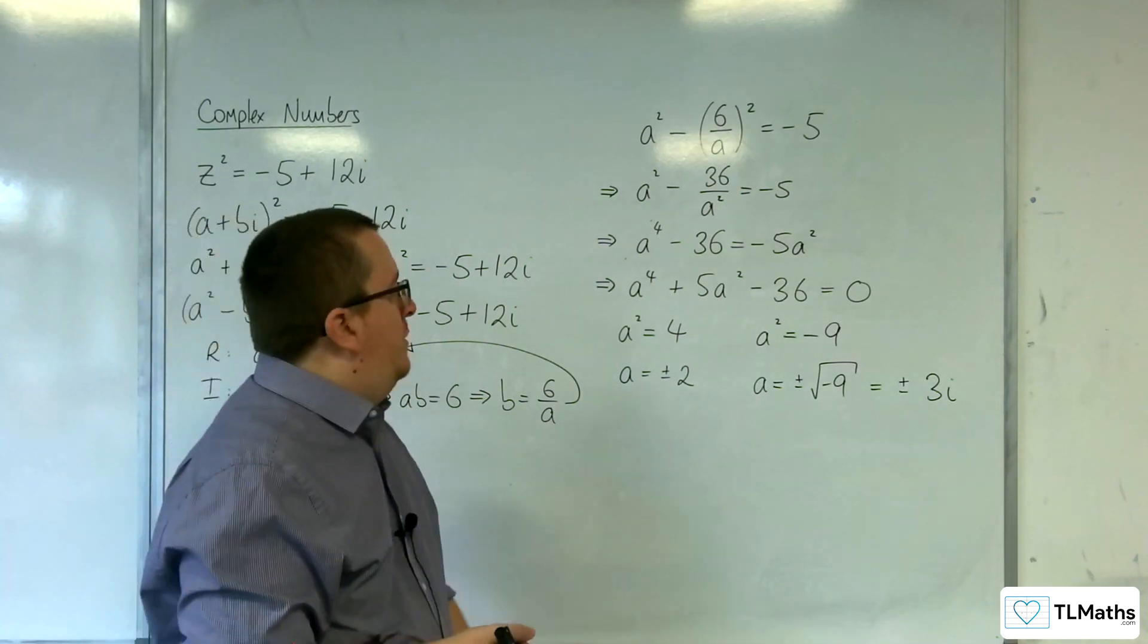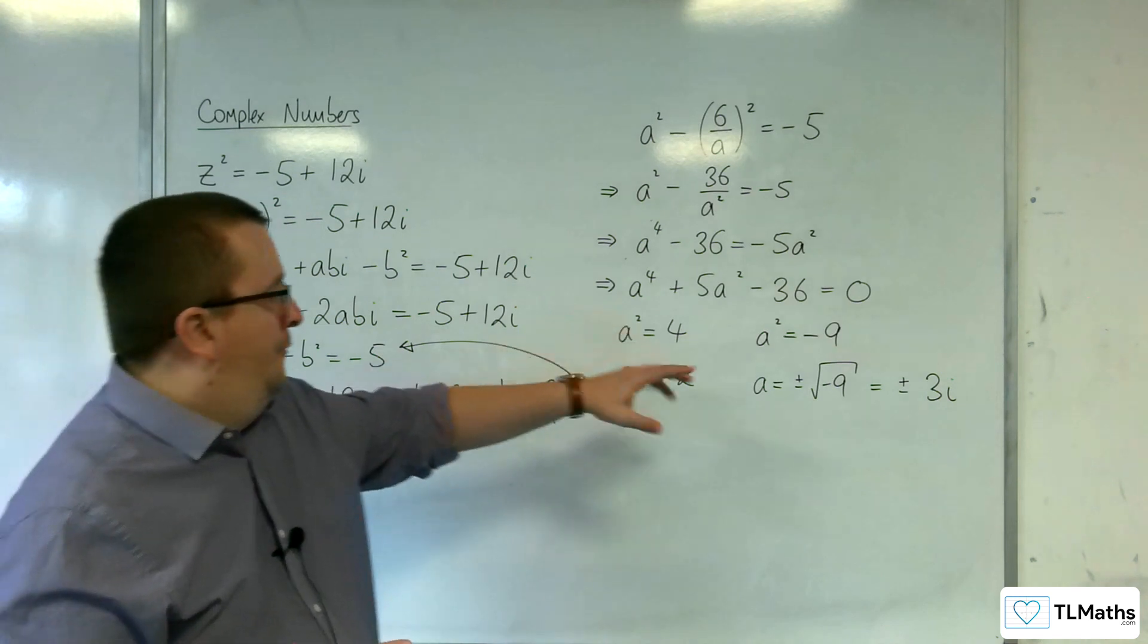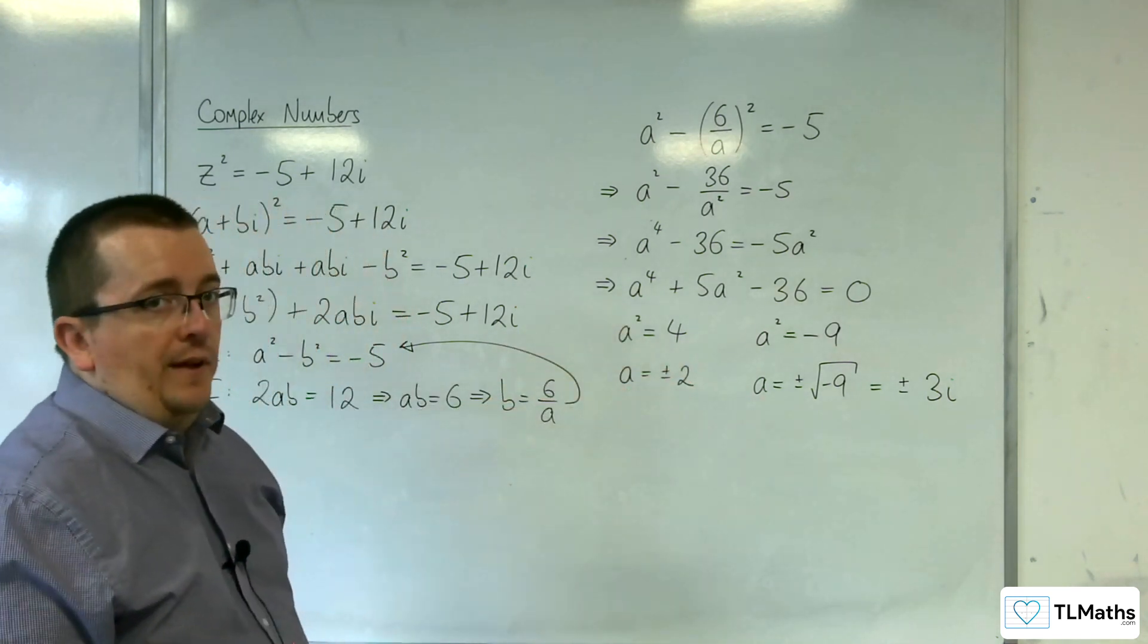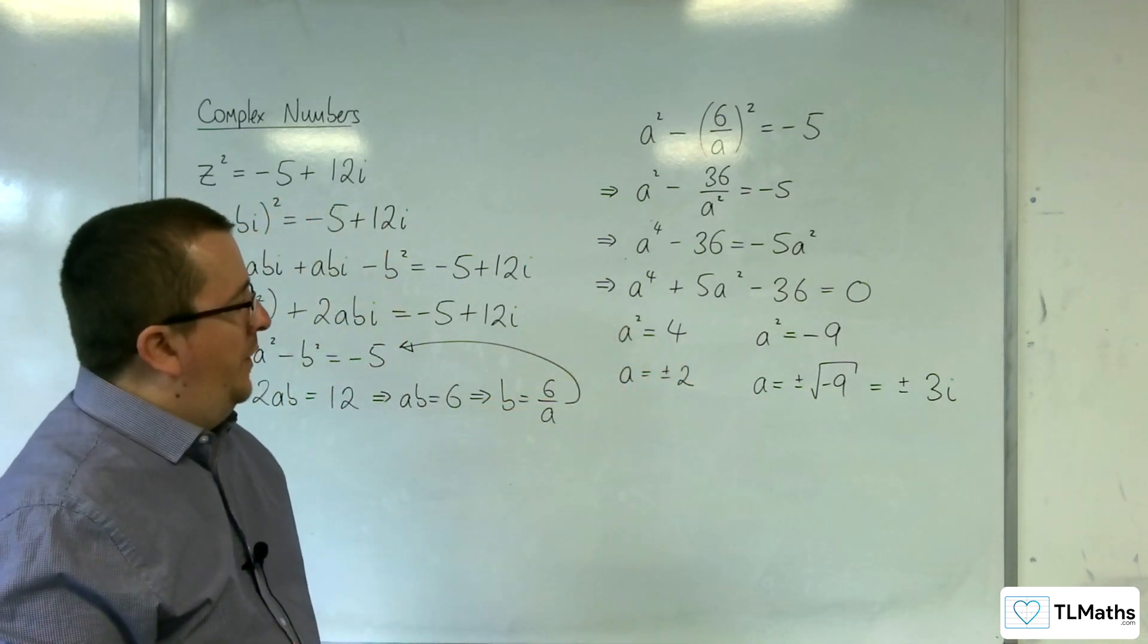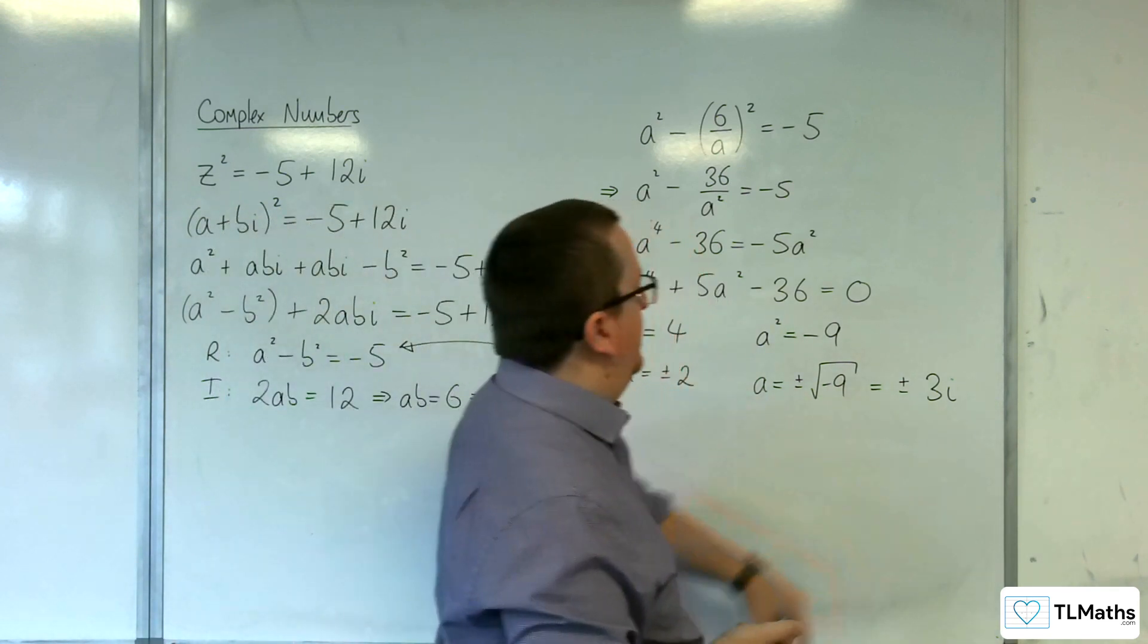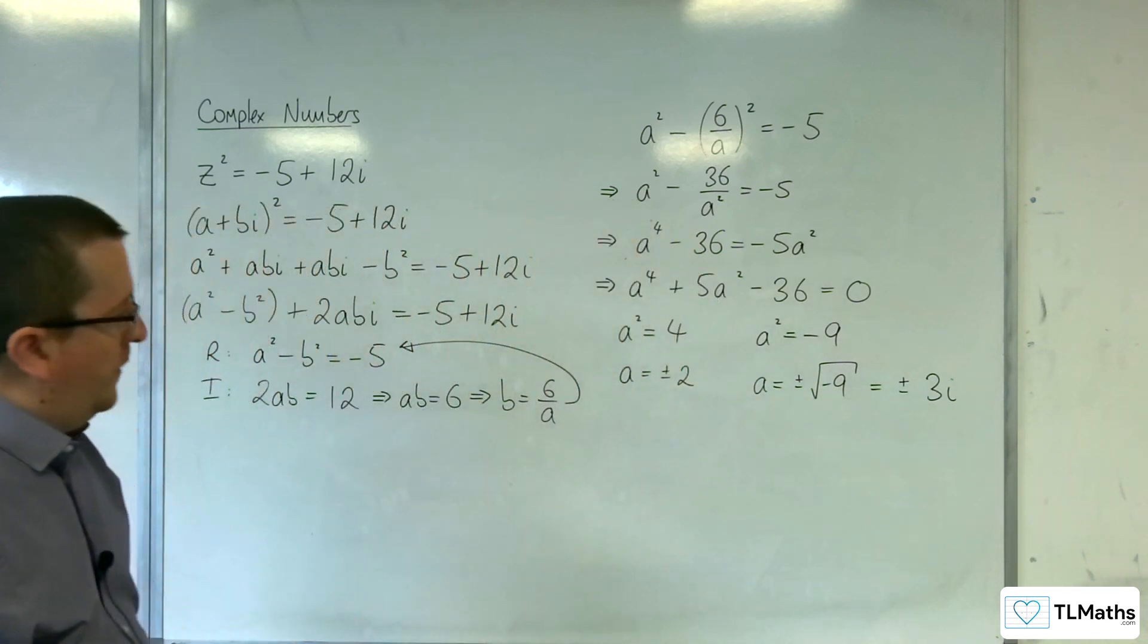So, the problem here is that I've actually got 4 possible values of a. So, we've got ±2, ±3i.